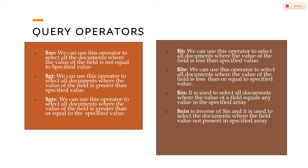The $gte operator retrieves documents where the value is greater than or equal to a specified value. $lte is the inverse — it retrieves documents less than or equal to a value. $in is used to select all documents where the value of a field equals any value in a specified array. $nin is the inverse of $in.